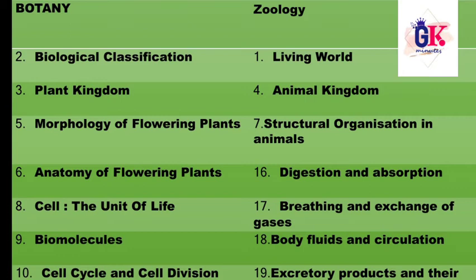In botany, we study the first chapter of plants. The 2nd chapter is biological classification. The 3rd chapter is plant kingdom. The 5th chapter is morphology of flowering plants, which covers external features.